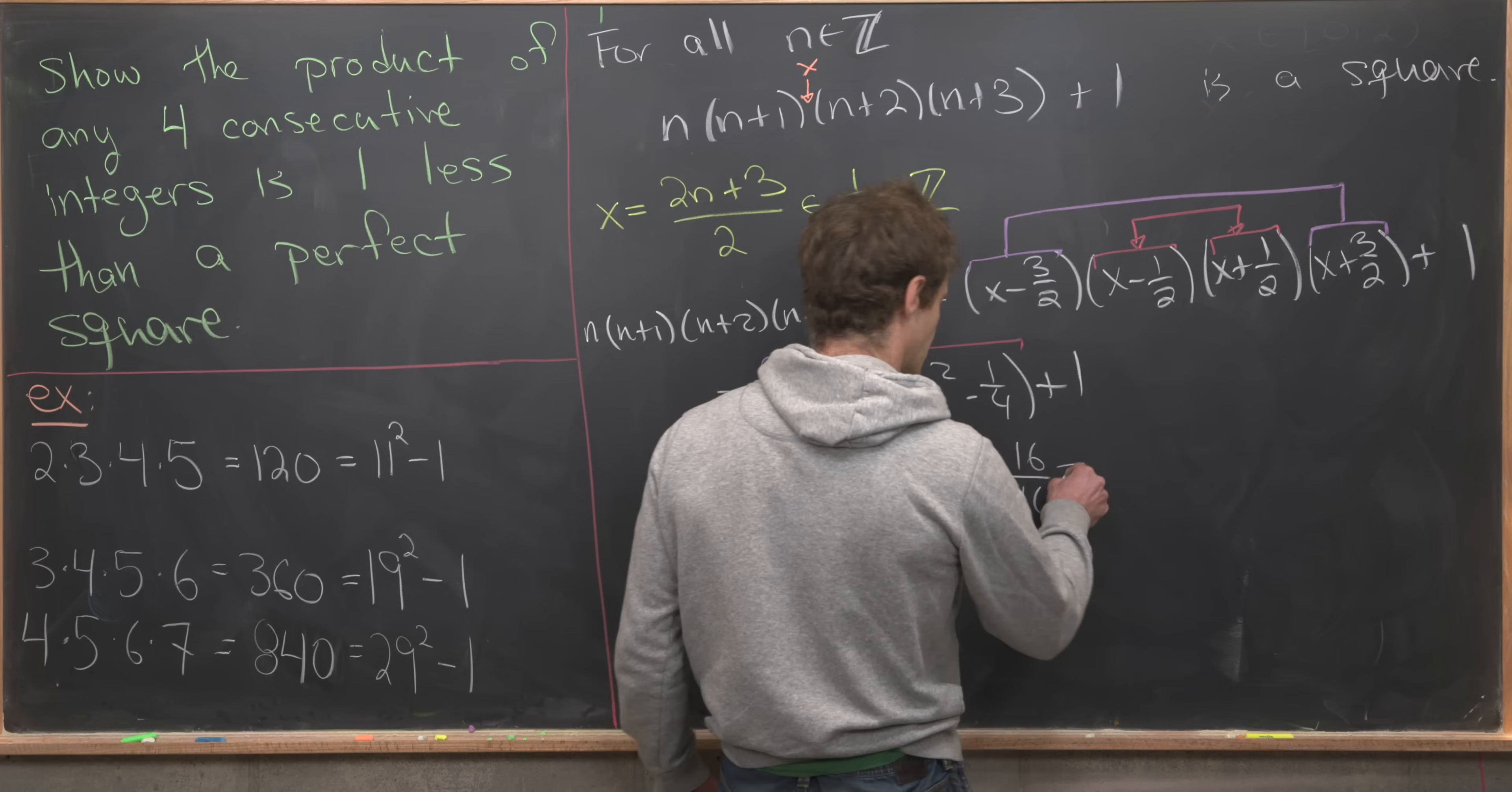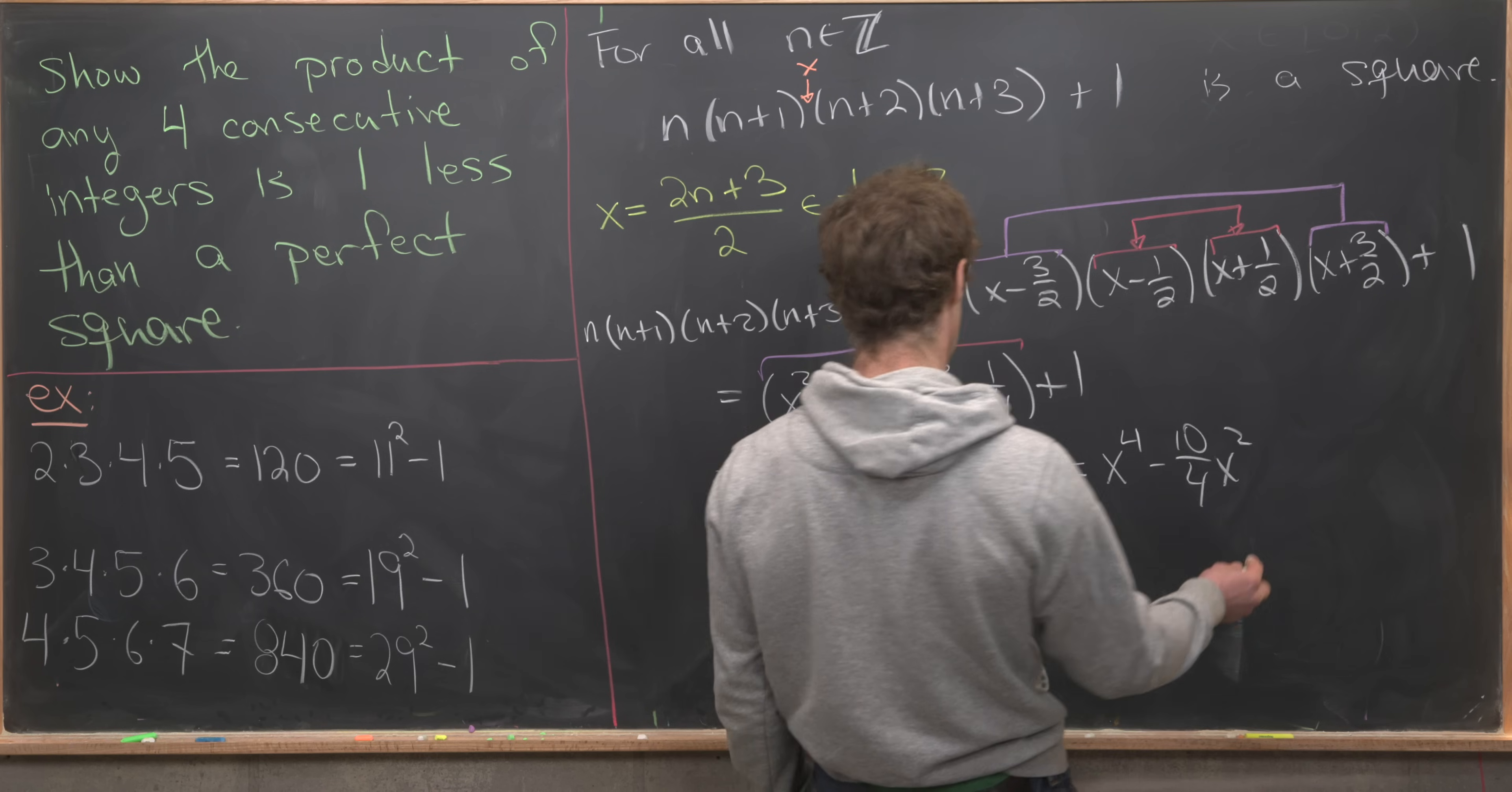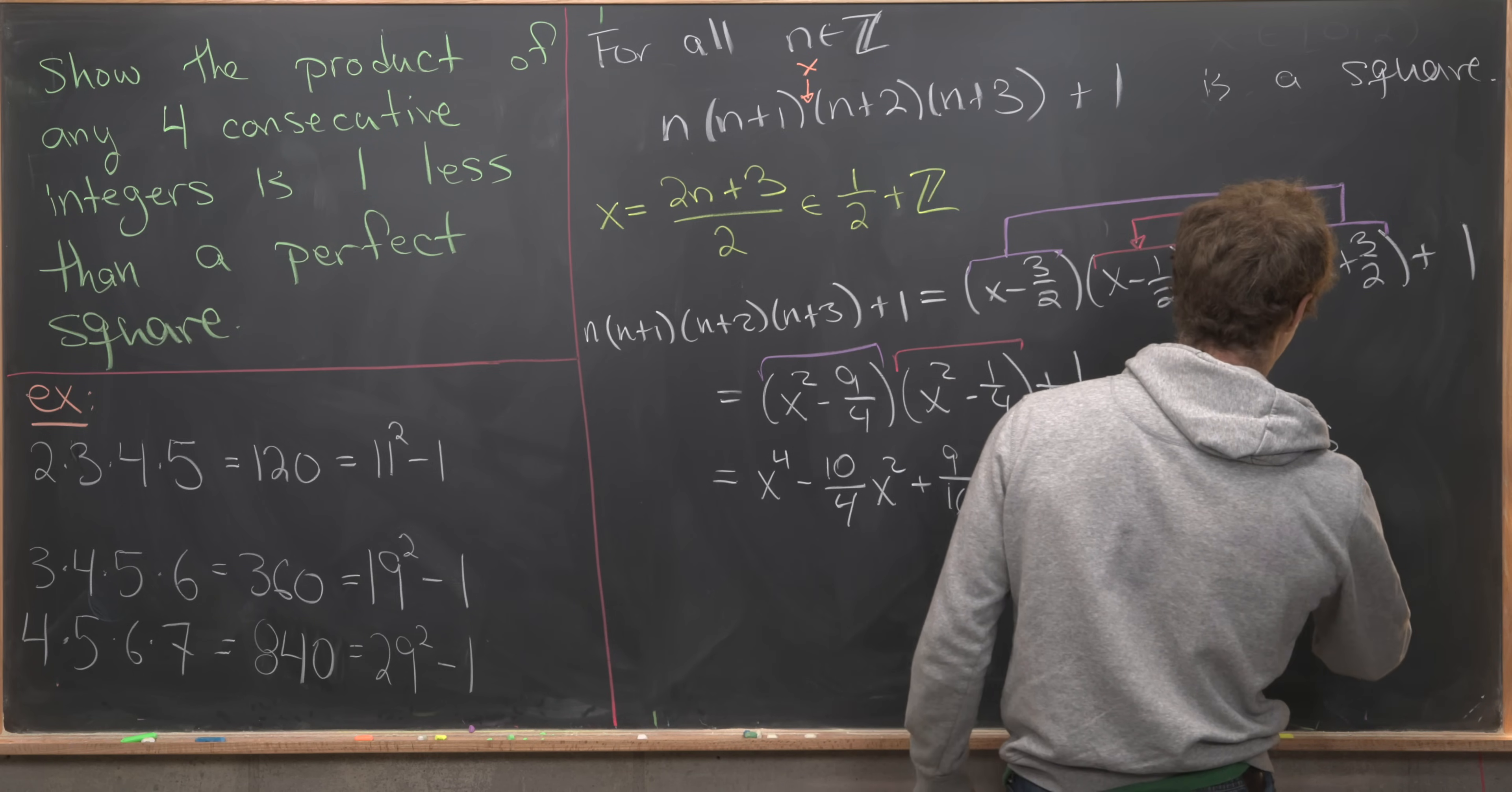So let's go ahead and write that we've got x⁴ - 10/4 x², and then finally, plus 25/16.